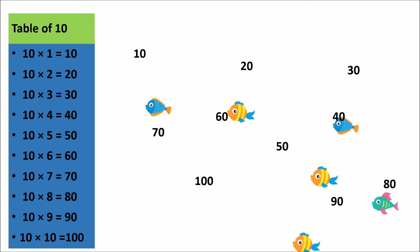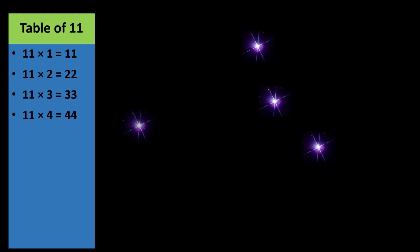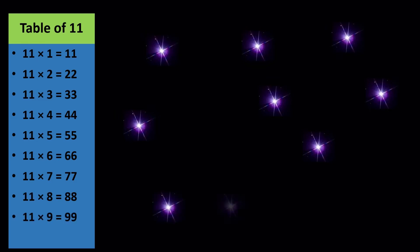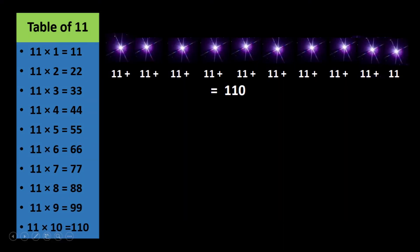Table of 11. This is my favorite. 11 1s are 11, 11 2s are 22, 11 3s are 33, 11 4s are 44, 11 5s are 55, 11 6s are 66, 11 7s are 77, 11 8s are 88, 11 9s are 99, 11 10s are 110.